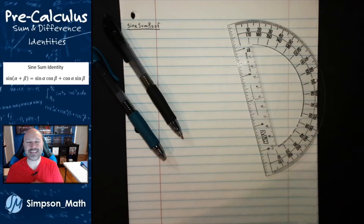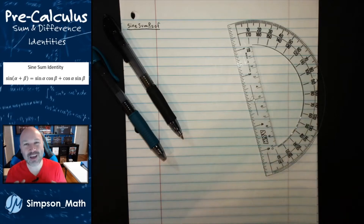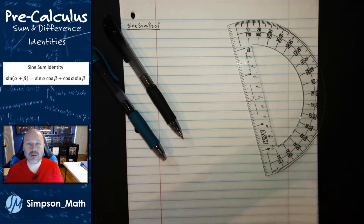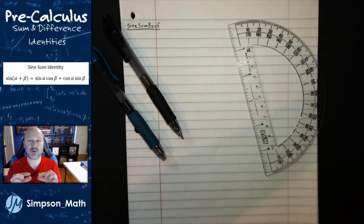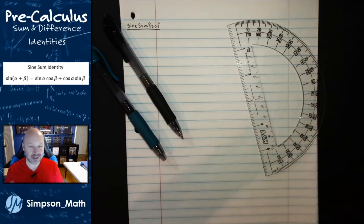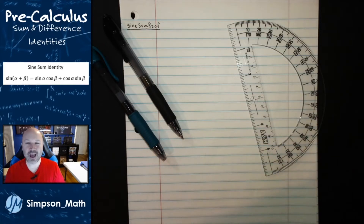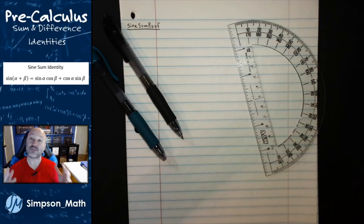Johnny here with Simpson Math. In this video, I'm going to do my best to walk through the construction proof of the sine sum identity. Most of my students have just begun the verifications, which are like proofs where we're proving things in a formal way, but they're maybe not as complex as what I'm about to do. In fact, this is probably the second hardest construction proof we'll do all semester long in trig, but it just fits into the lecture next, so I'm going to go ahead and show you this construction proof.